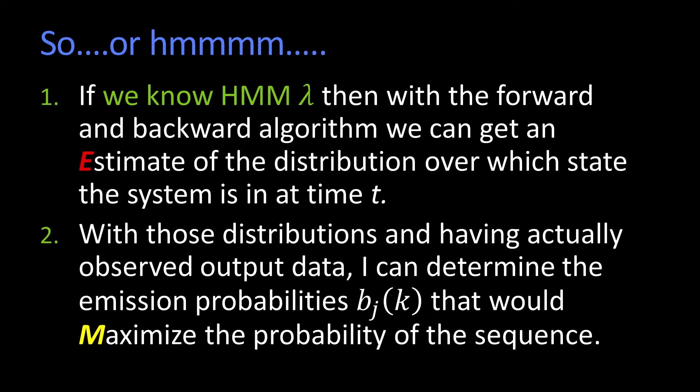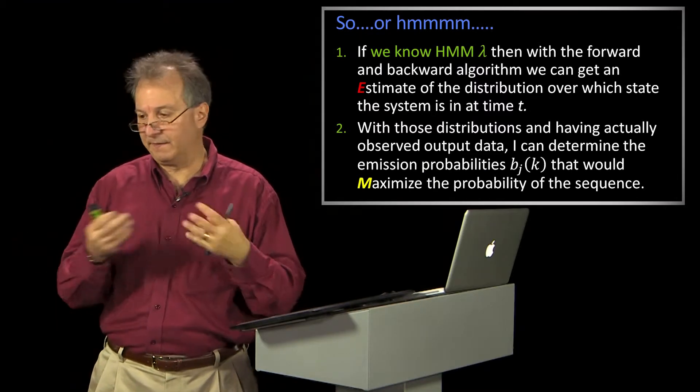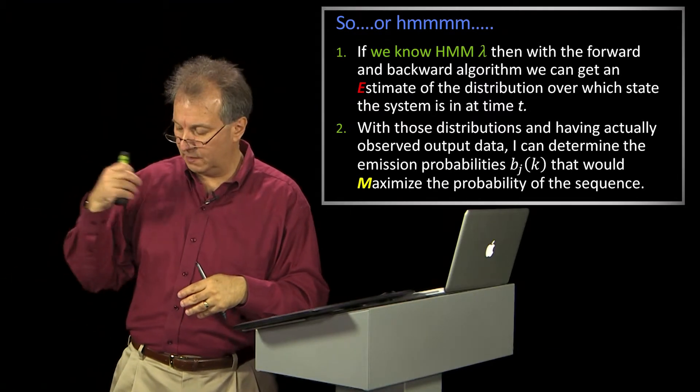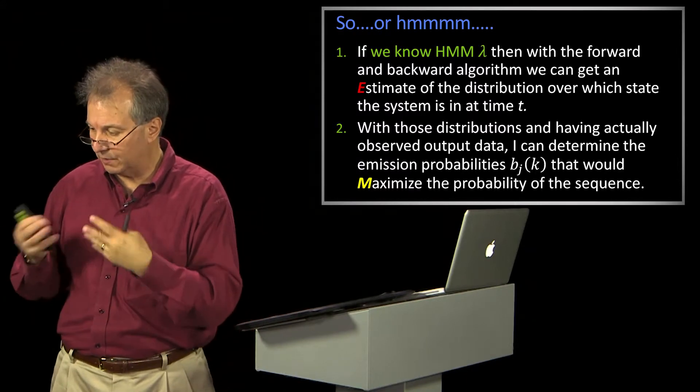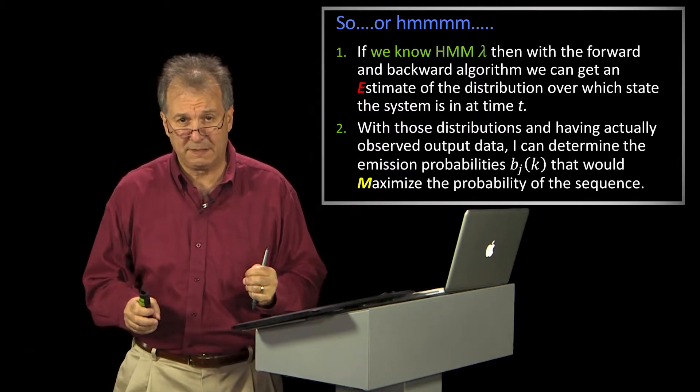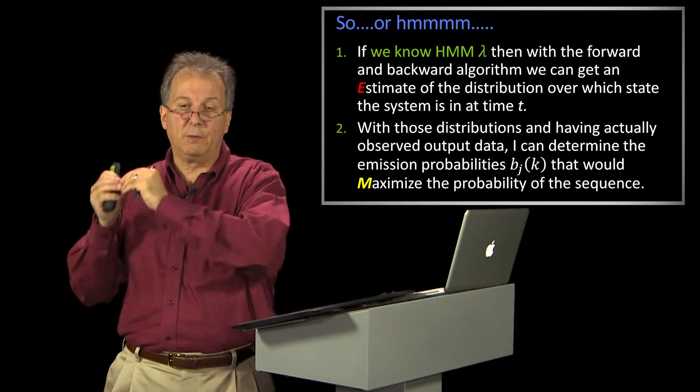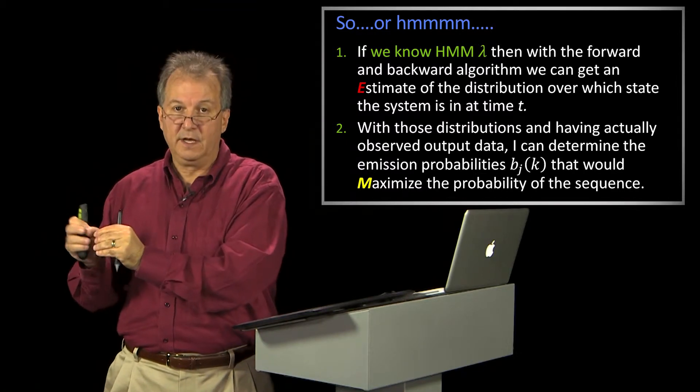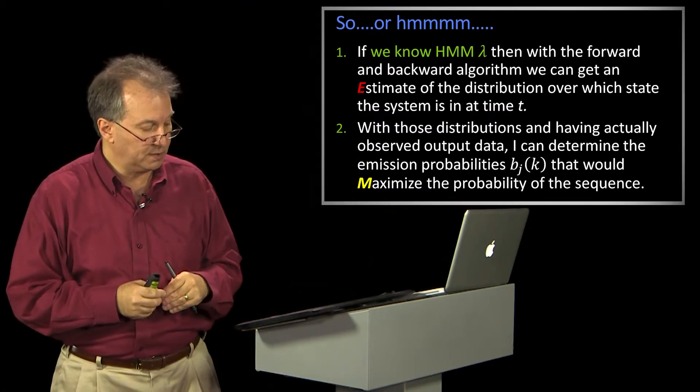It's no different than saying maximum likelihood. If I'm drawing something and I pull ten things out and seven of them are black and three are red, there's a 70% chance of being black. That value is the one that would have maximized the likelihood of pulling out seven of them.